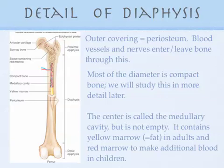Compact bone is very, very dense — way more dense than spongy bone. We're going to study this in detail in video number two. The very center of the diaphysis is called the medullary cavity. Cavity implies something empty, but this cavity is not empty — it contains yellow marrow, which is basically fat, so adults have some normal fat inside their bones. In children, this was red marrow, because children have a need to make additional blood cells as they develop.